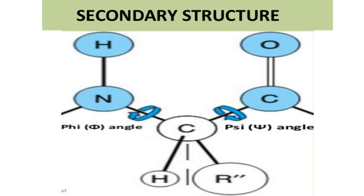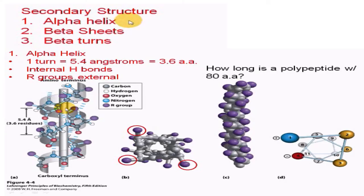Those two bonds are the alpha carbon to carbonyl carbon bond and the alpha carbon to nitrogen bond. Secondary structure is further divided into three types: alpha helix, beta sheets, and beta turns. The alpha helix is in the form of a helix where each turn is equal to 5.4 angstroms and consists of 3.6 amino acid residues.